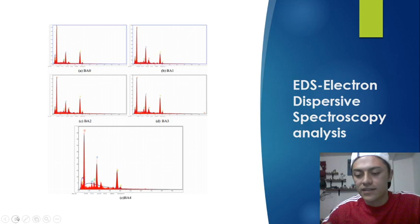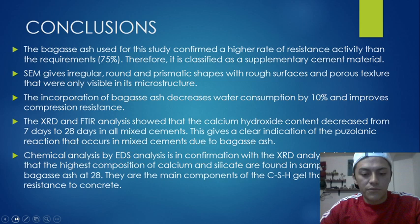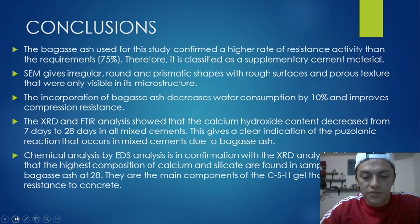The first conclusion is the bagasse ash used for this study confirms a higher rate of resistance activity than the requirements of 75%. Therefore, it is classified as supplementary cementitious material.